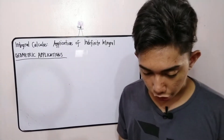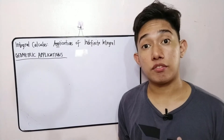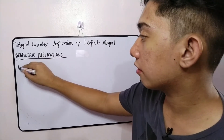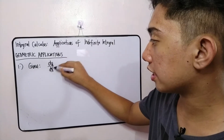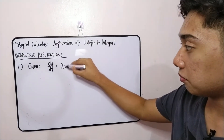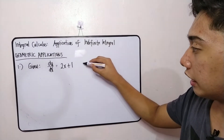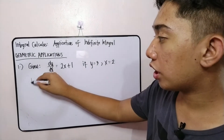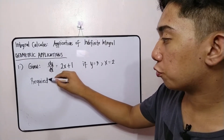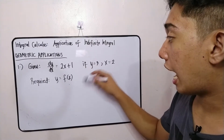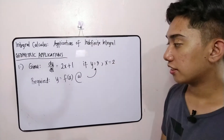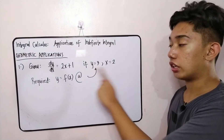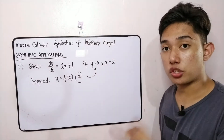The first problem pertains to finding the function y when the derivative of the function is given. The given here is: the derivative of y with respect to x is equal to 2x plus 1. We are also given that when y is 3, x is 2. We are required to find the function y in terms of x using these initial values.